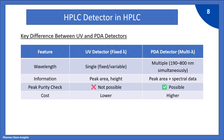Now let's see the key differences between UV and PDA detectors. First, wavelength: UV uses a single fixed wavelength, while PDA can simultaneously scan 190 to 800 nanometers. For information, UV provides peak area and height, while PDA provides peak area, height, plus spectral data. Peak purity check is not possible with a UV detector but is possible with a PDA detector. Finally, the cost of a UV detector is lower while a PDA detector costs more.